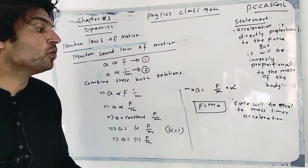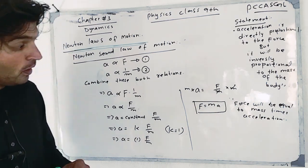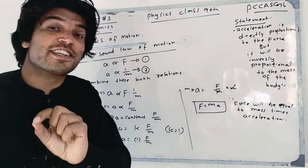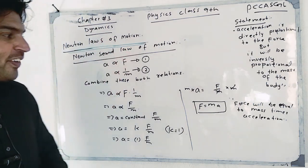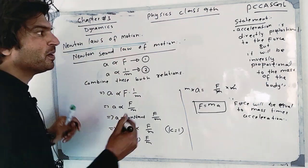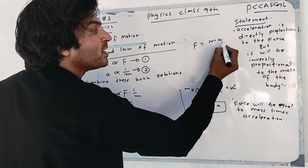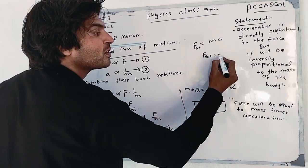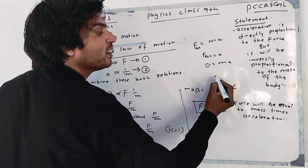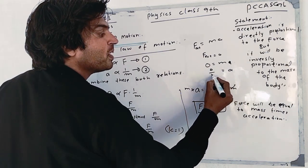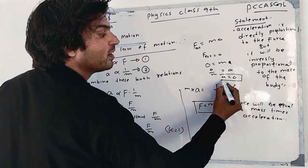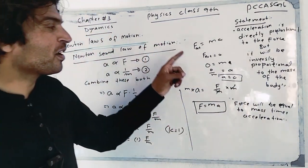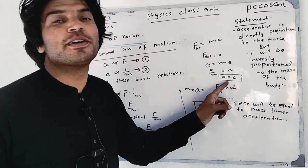Newton's Second Law: F equals MA. Now consider external force. F external equals MA. If all divisions agree and acceleration equals zero, then the external force is also zero, because when acceleration is zero, the body remains in the same state.